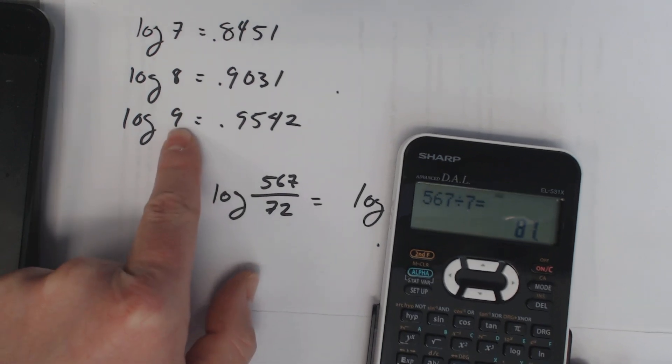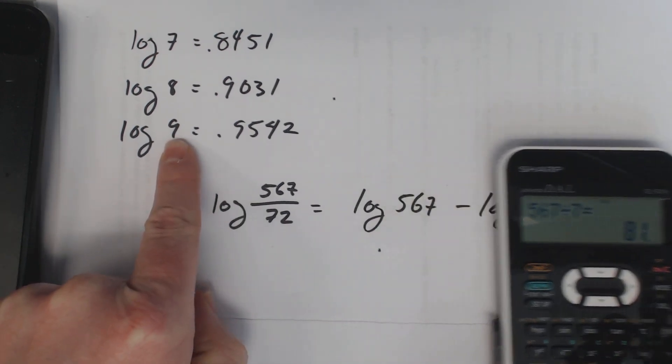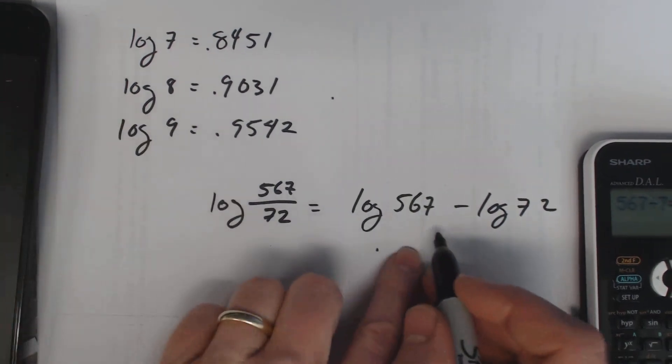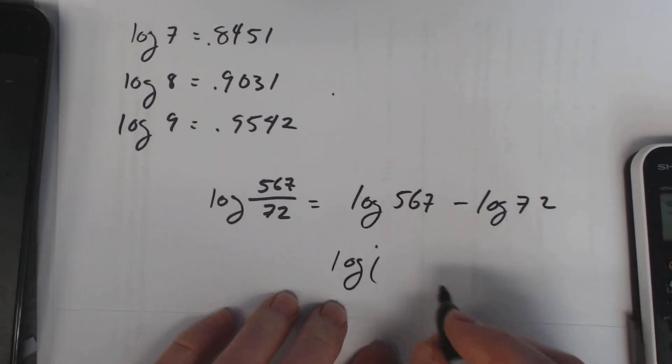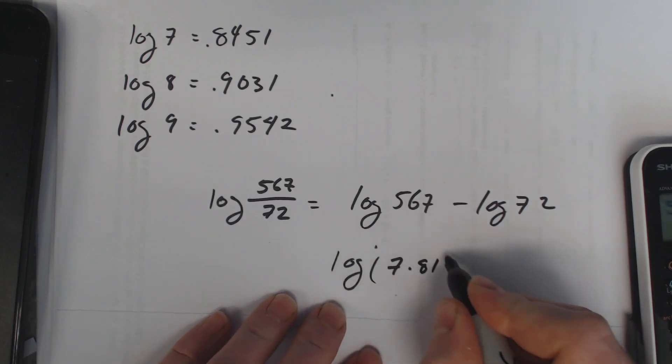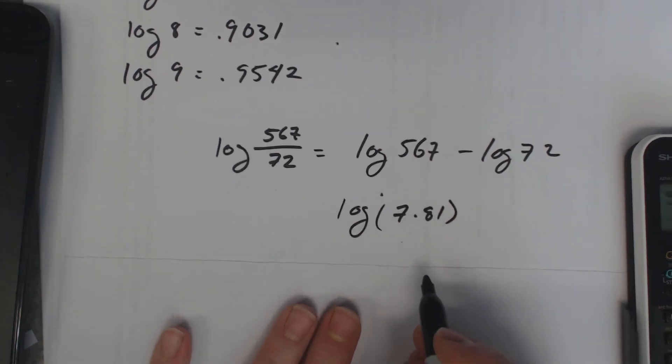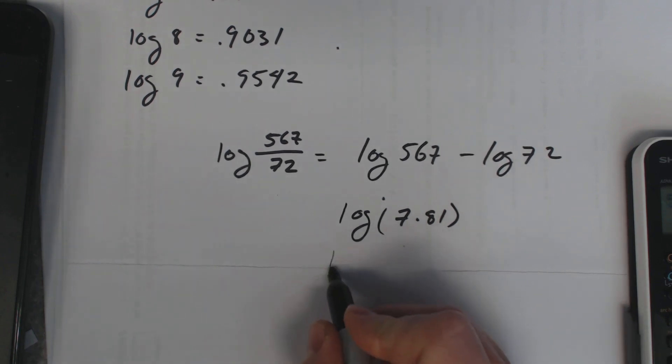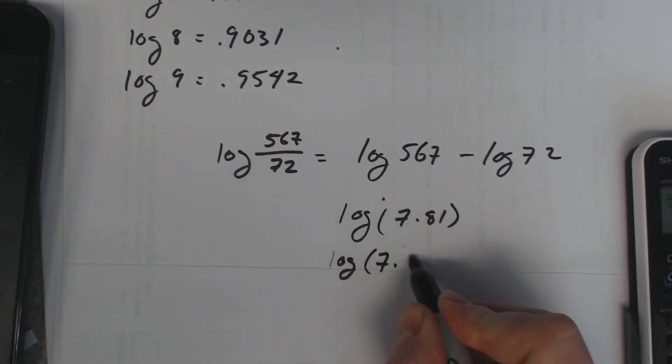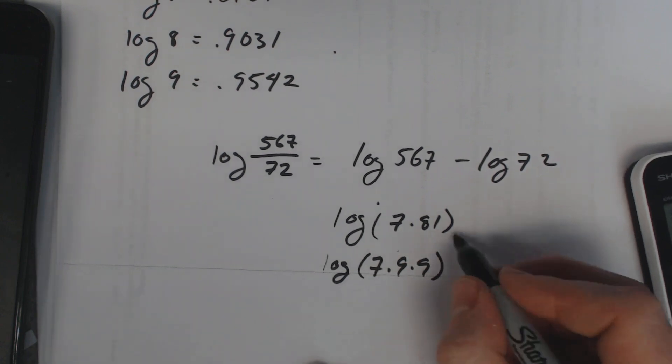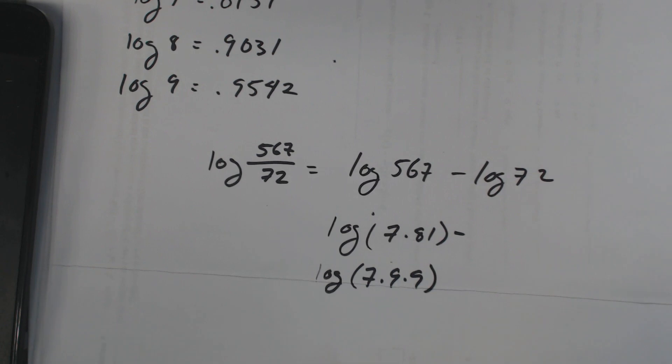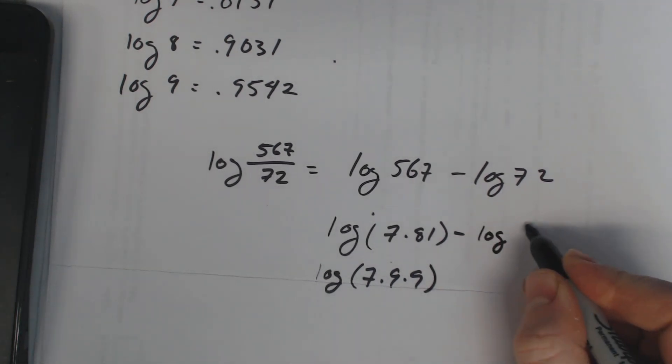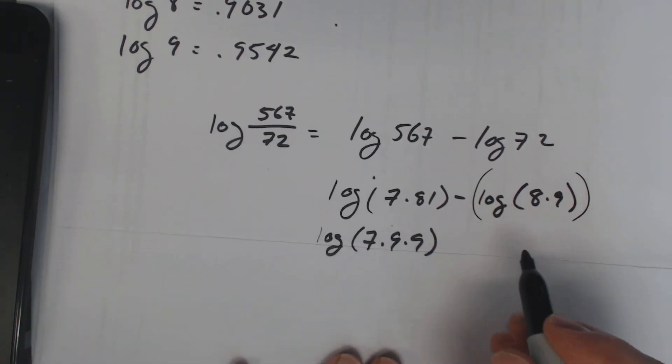Now that rings a bell, 9 times 9 is 81. So we can rewrite 567 as 7 times 81, and 81 is the same thing as 9 times 9. Minus log 72, that's 8 times 9.